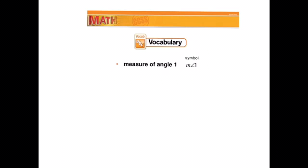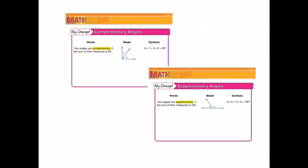The measure of angle 1 - when we talk about degrees, there's a specific symbol that we have to use. That M in front of it tells me that it's the measure, so exactly how large it is or small it is or how many degrees it is.